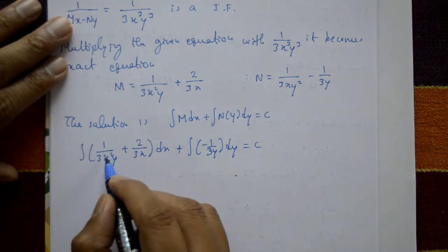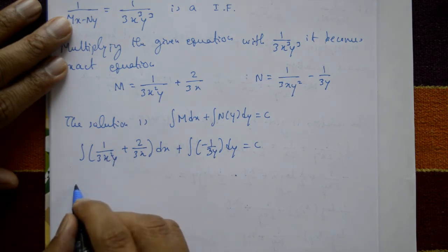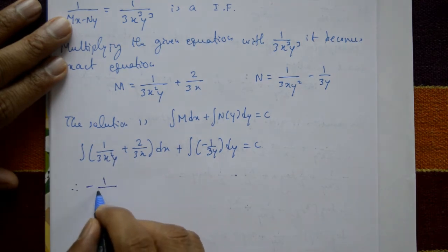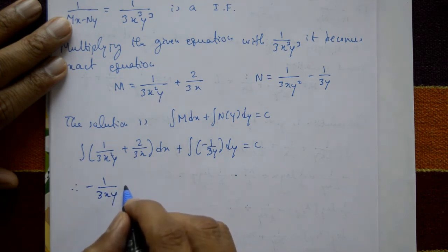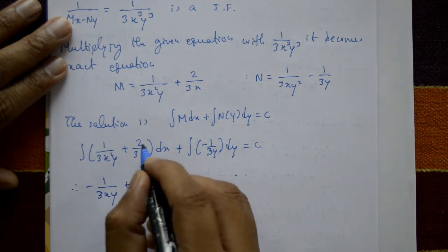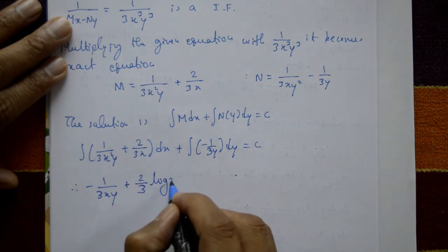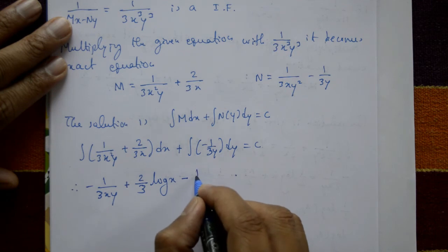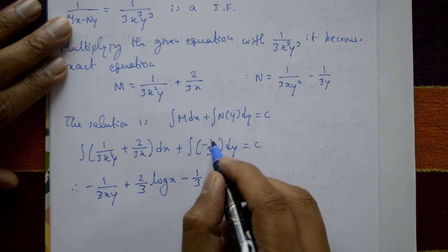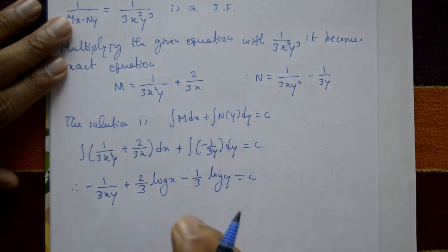Integrating 1/x² gives -1/x, so the first part gives -1/(3xy). Integration of 2/(3x) gives (2/3)ln x. The constant 1/(3y) integrates: integration of 1/y gives ln y, so minus (1/3)ln y. This equals c.